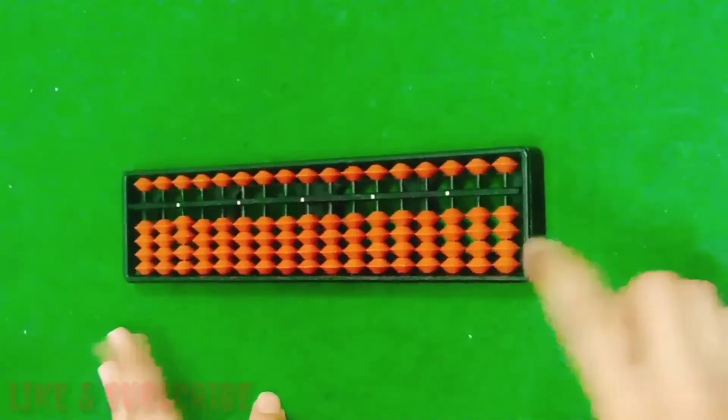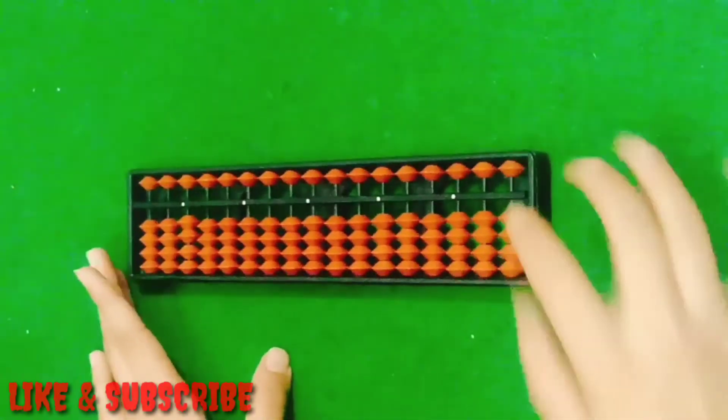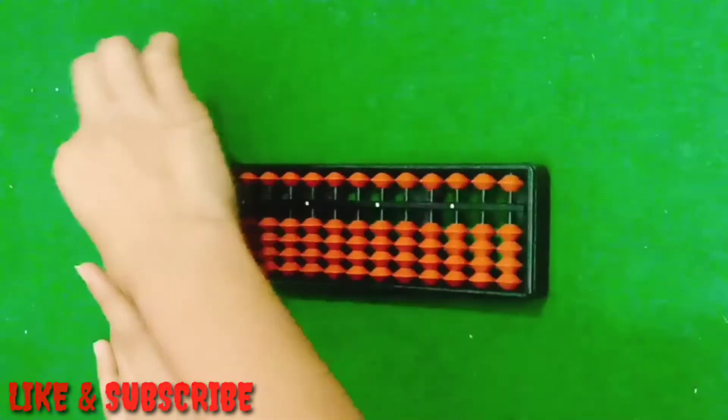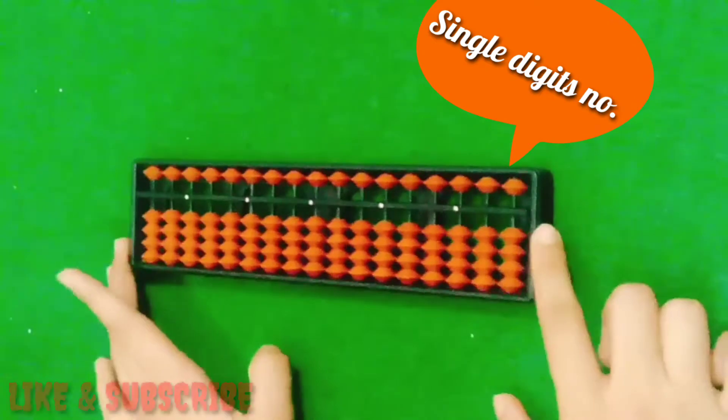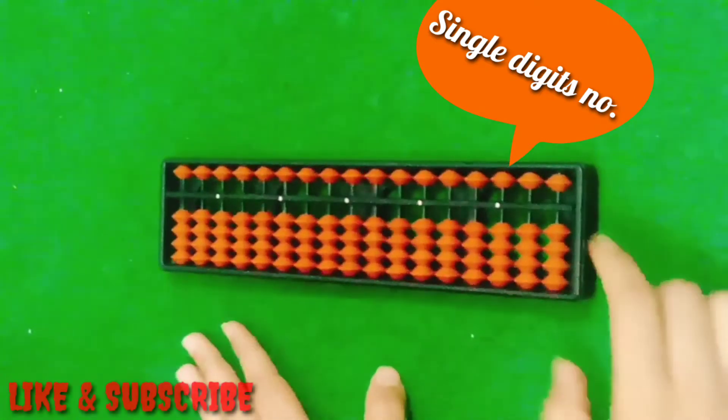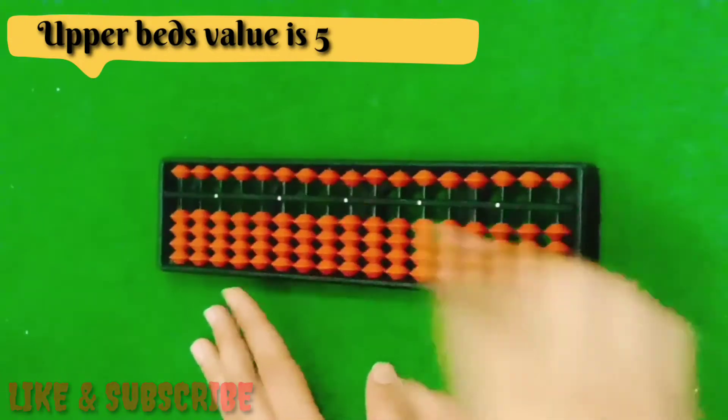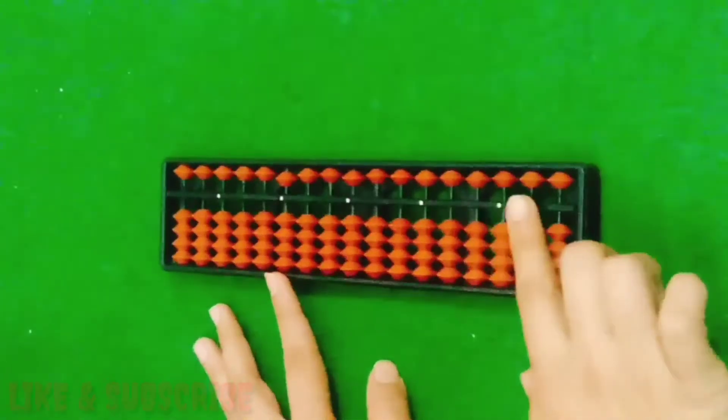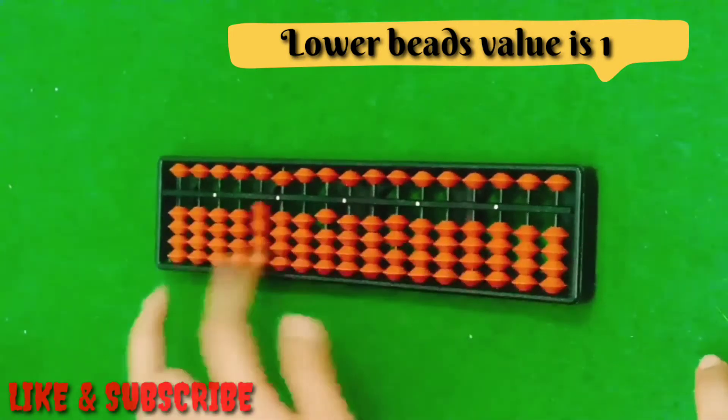First of all, I am calculating single digit numbers on abacus. The upper bits value is 5, and the lower bits value is 1. All the lower bits value is 1.